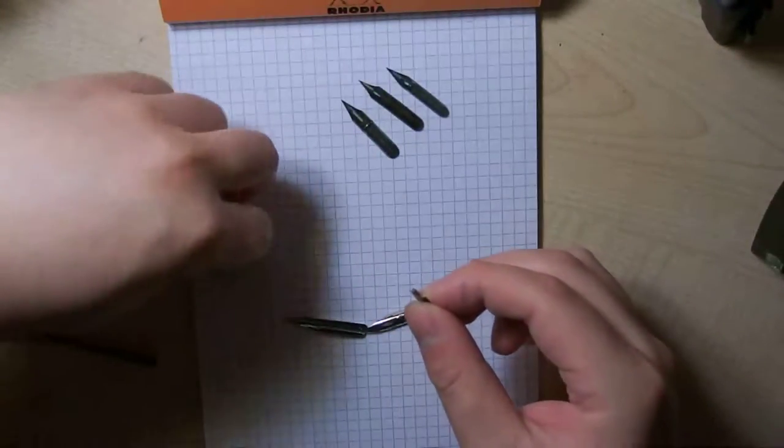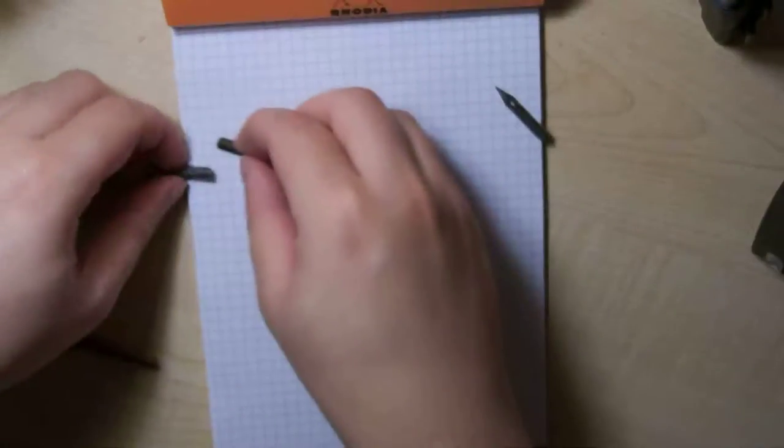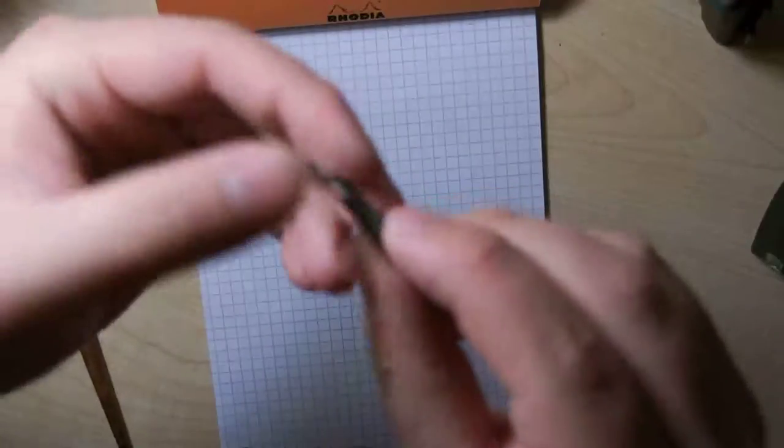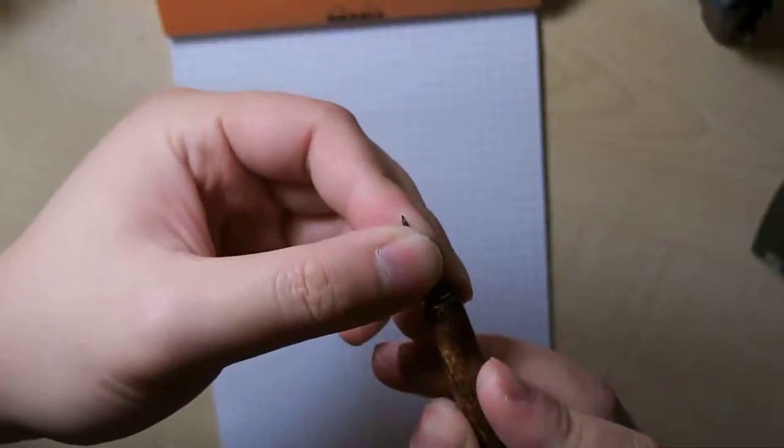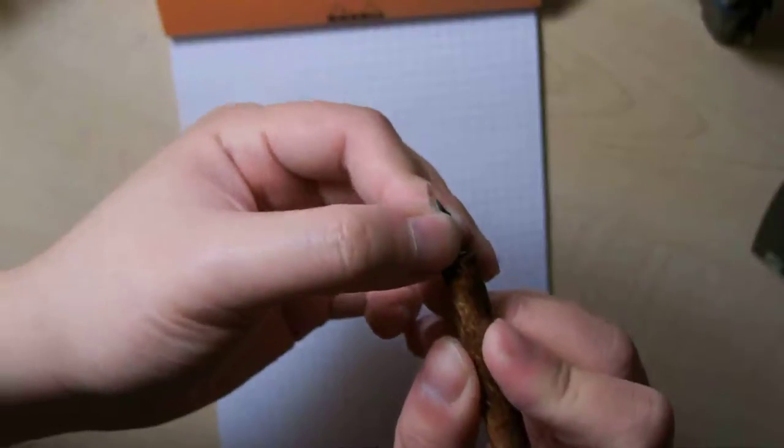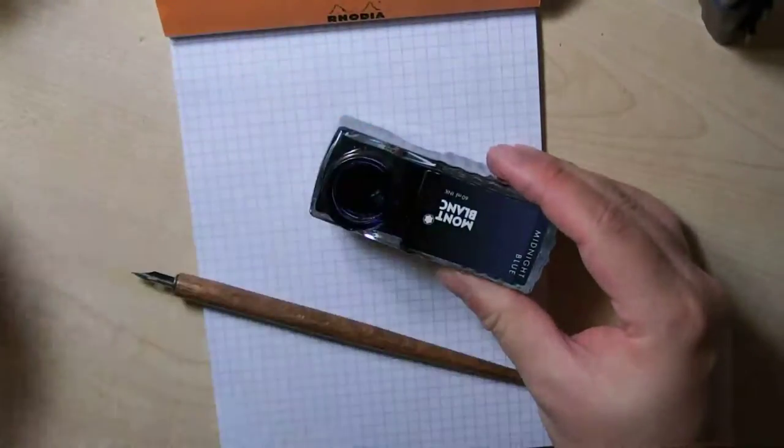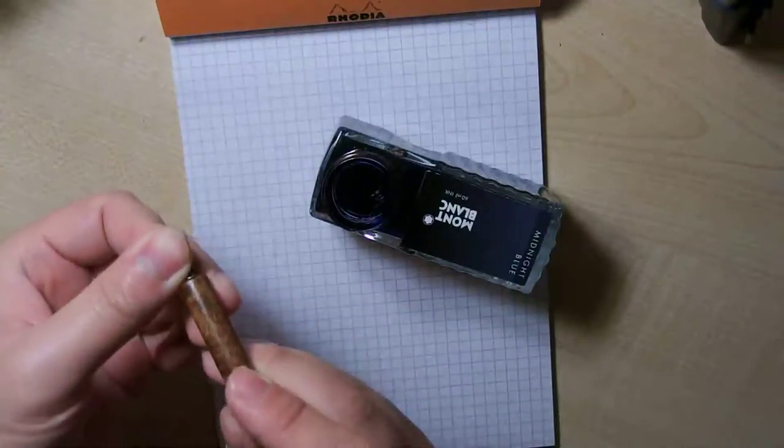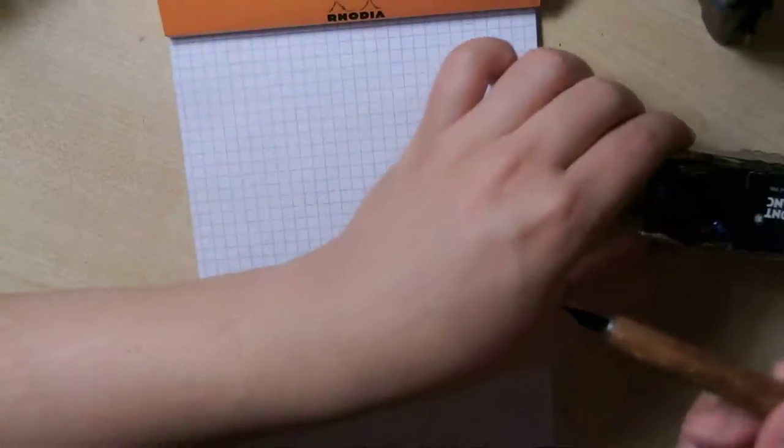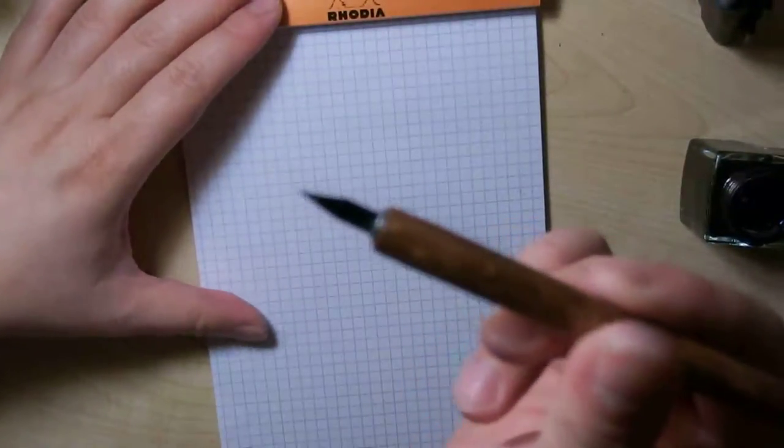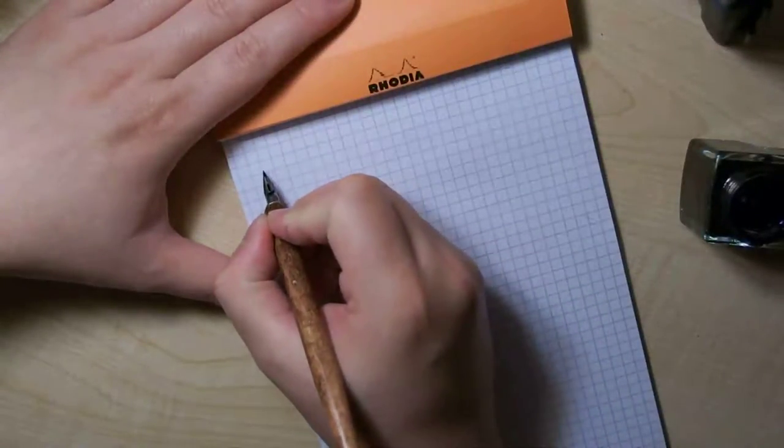Now I'm gonna write them one by one to show you the difference. Let's start off with my favorite, my very favorite, the Spencerian number one which is not in production anymore so it's very hard to find. It's considered one of the better nibs of the olden days. Now I'm just gonna use some regular fountain pen ink, the Mont Blanc Midnight Blue, nothing fancy, no India ink or anything like that, just regular fountain pen ink.